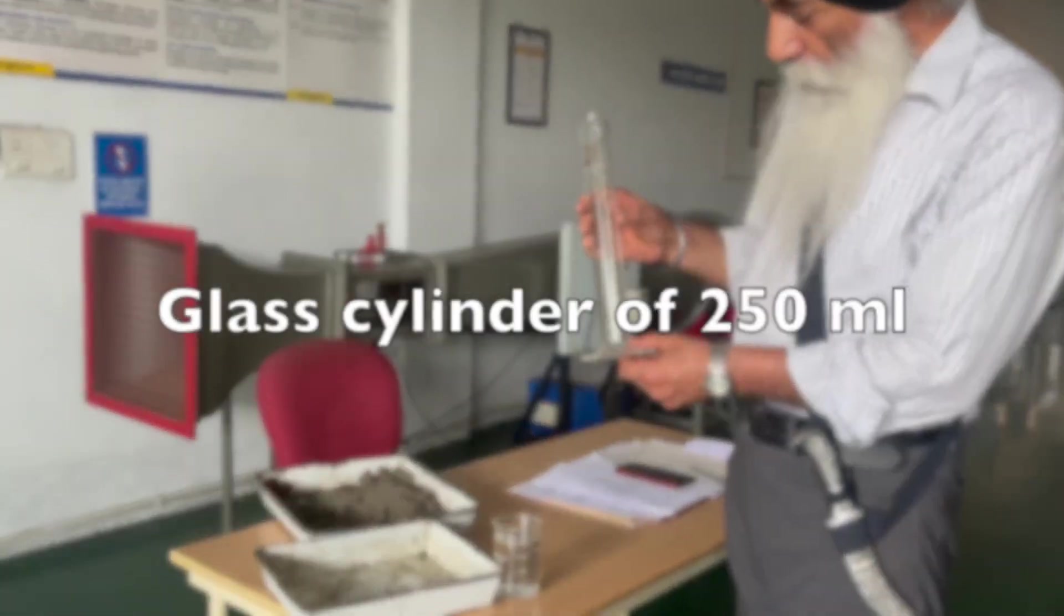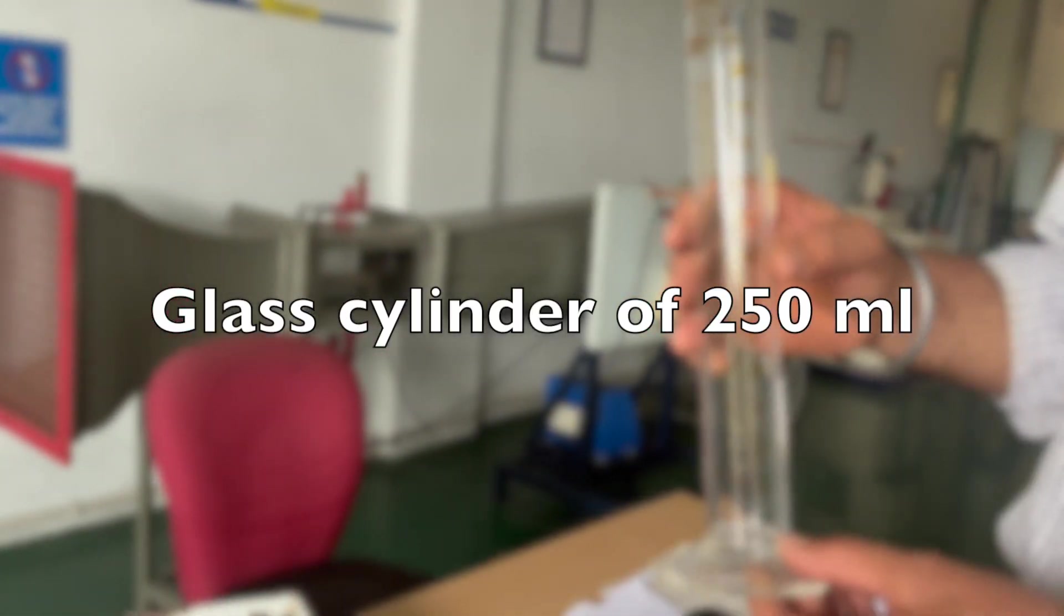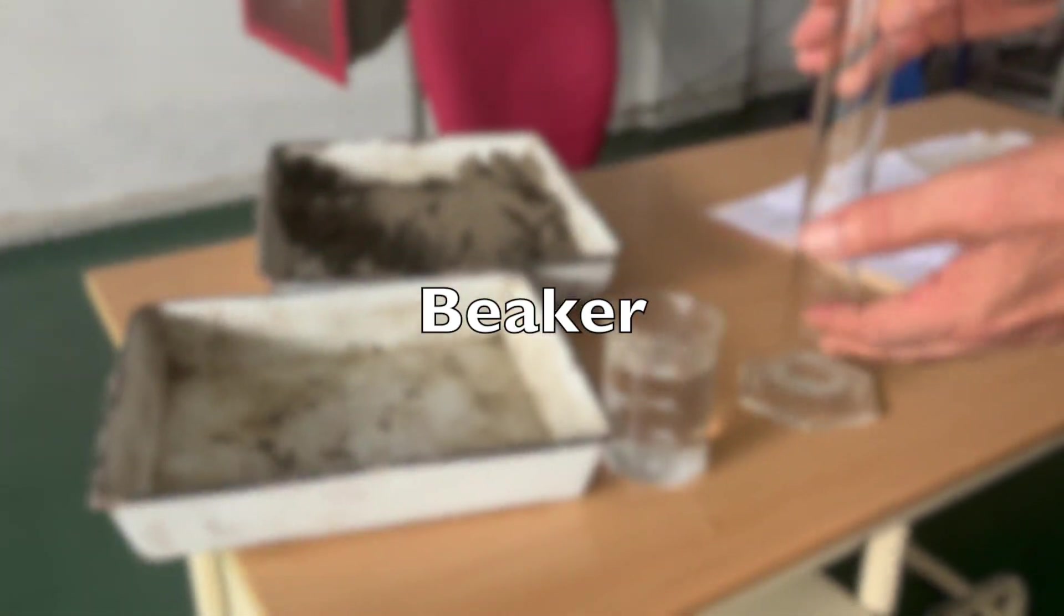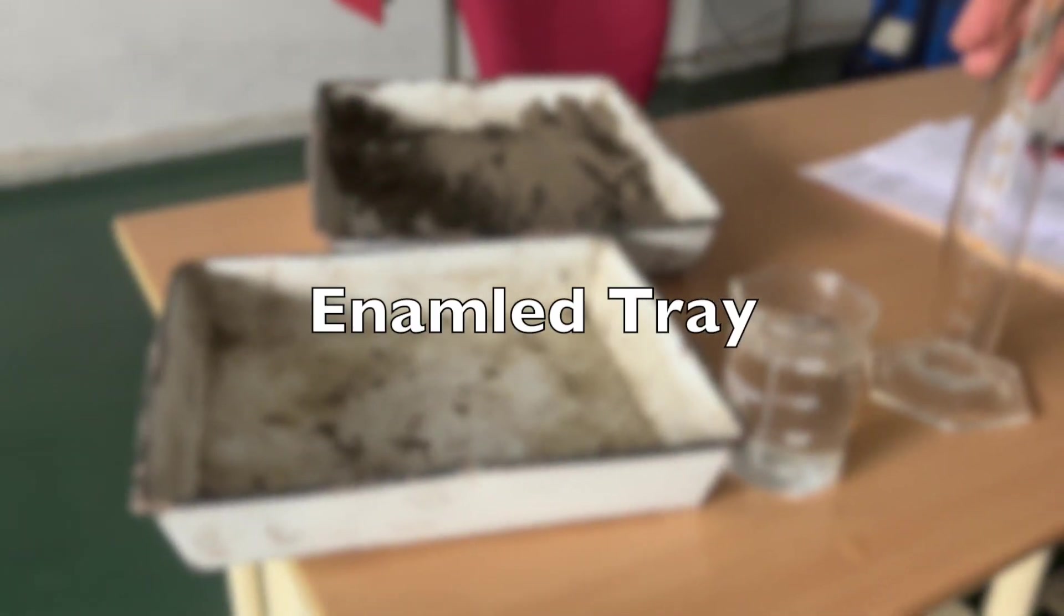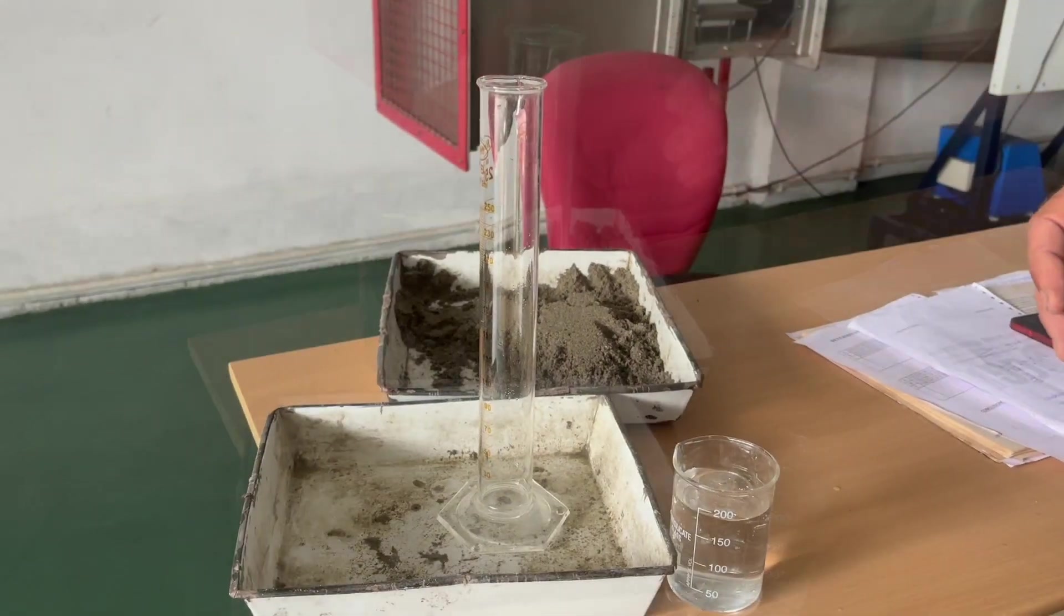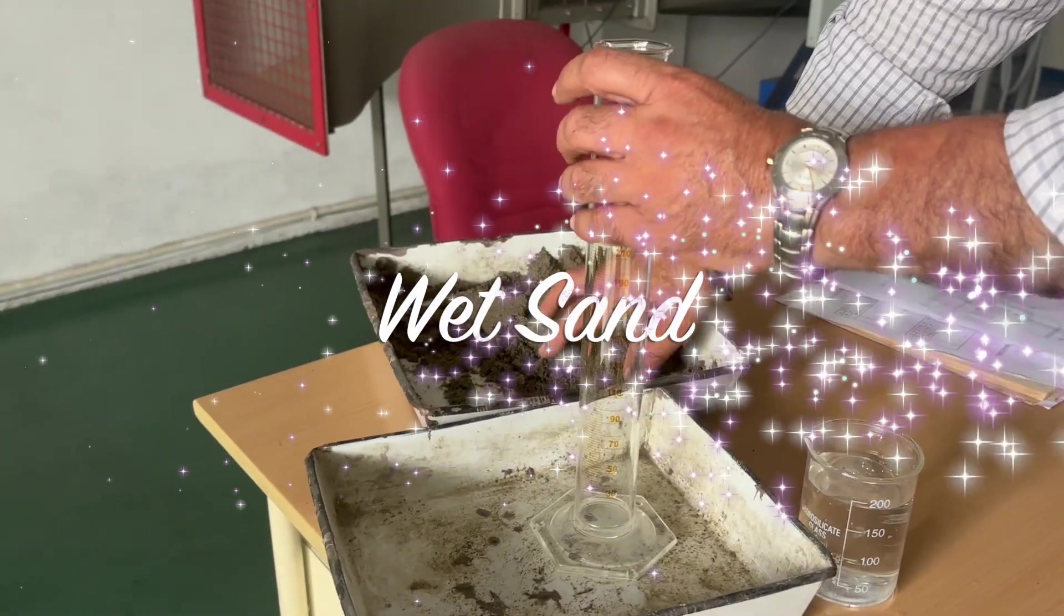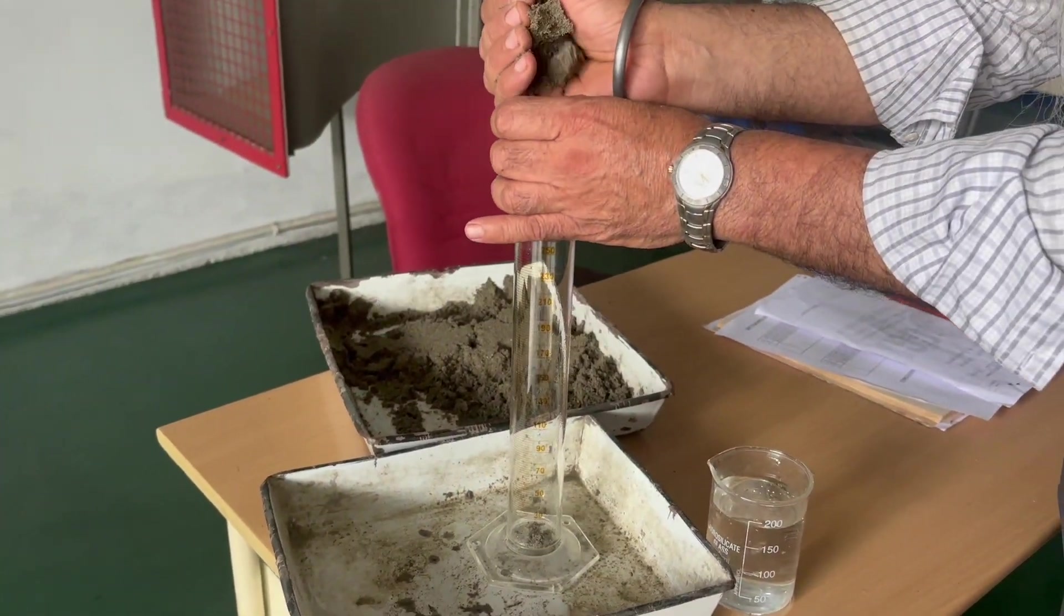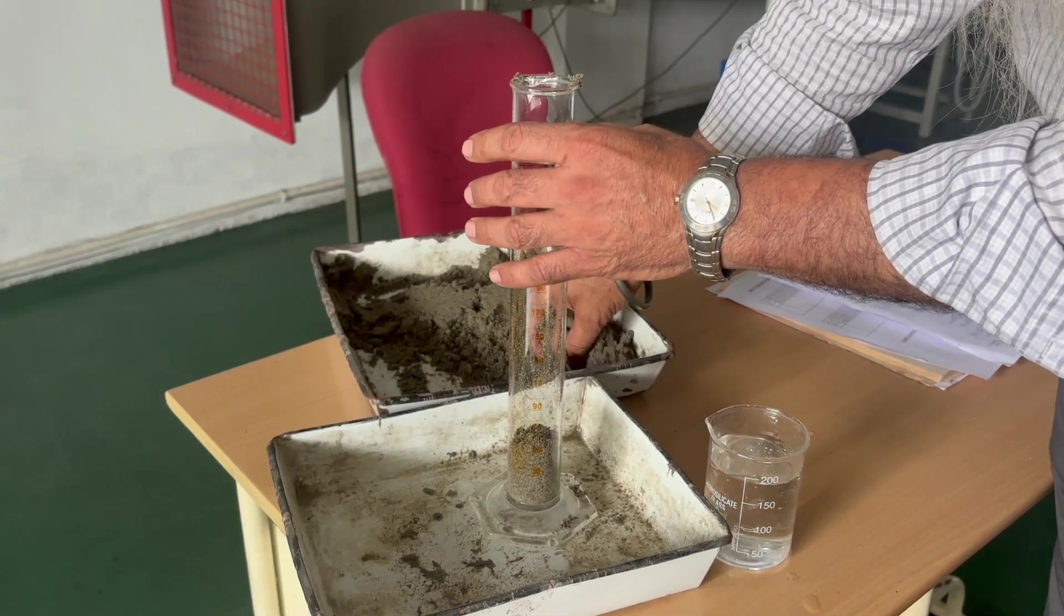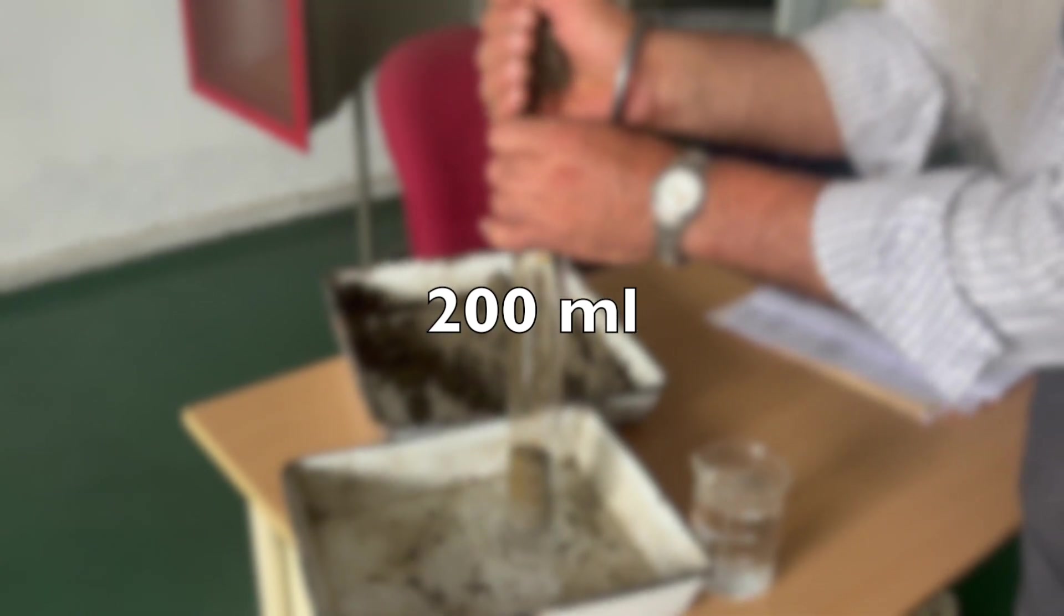The greatest use is graduated glass cylinder of 250 ml. Then we come for water and this is we have taken the enamel tray for taking the sample. So you will take the wet sand, moisten sand and fill it up to 200 ml.